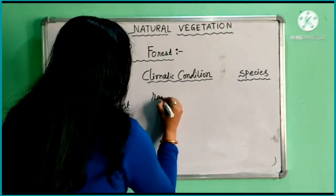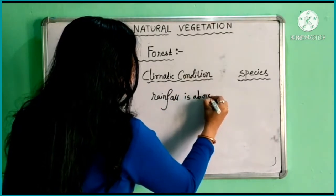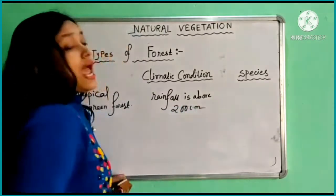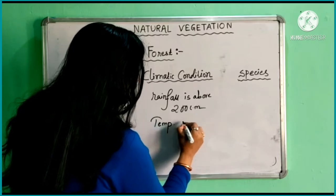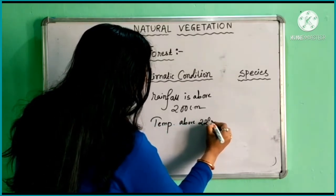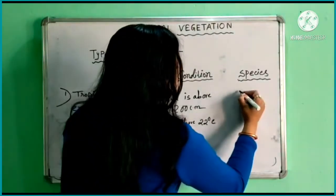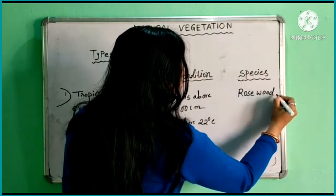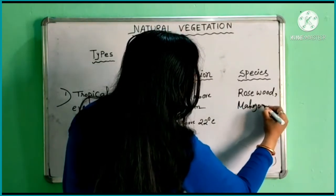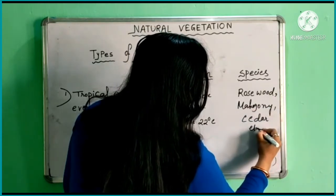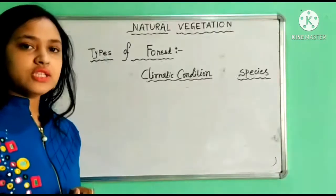This type of forest mainly spreads in areas which receive rainfall above 200 centimeters. The temperature is above 22 degrees centigrade. The main species found in tropical evergreen forest include rosewood, mahogany, cedar, and so on.